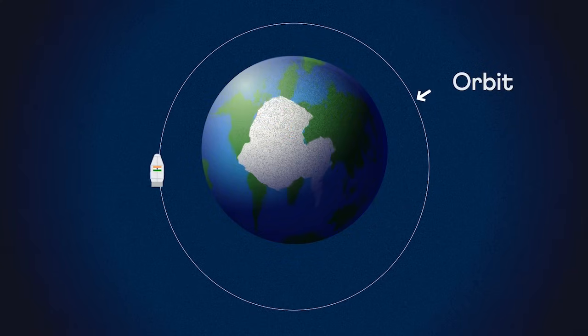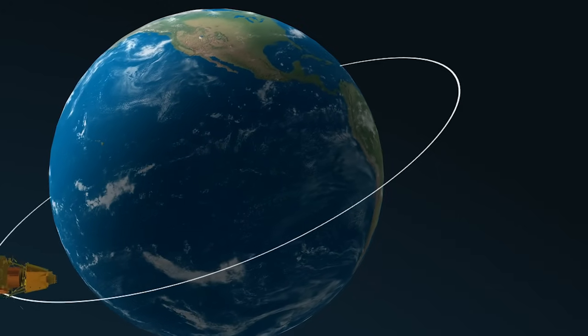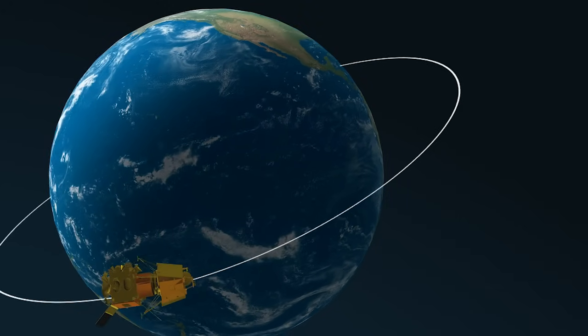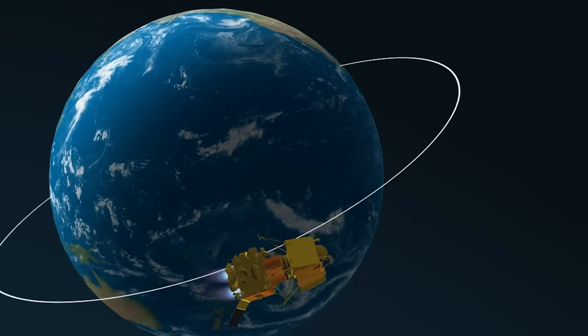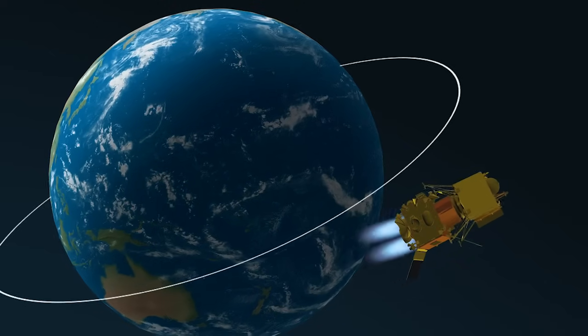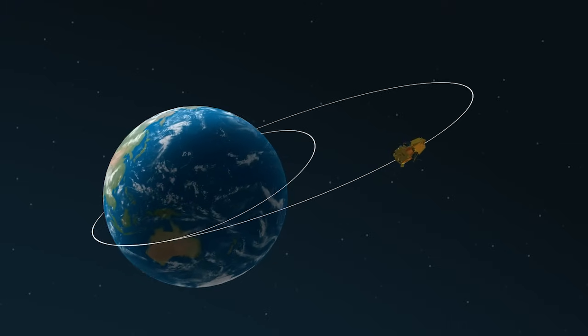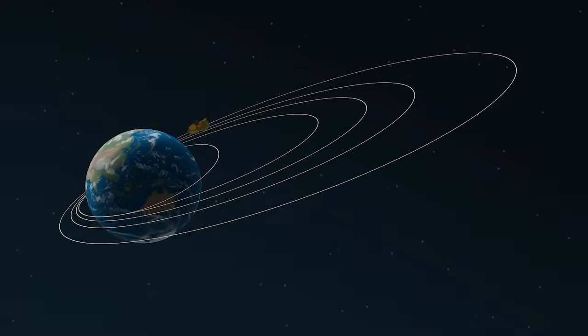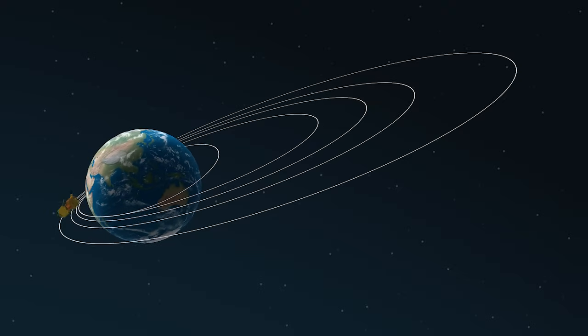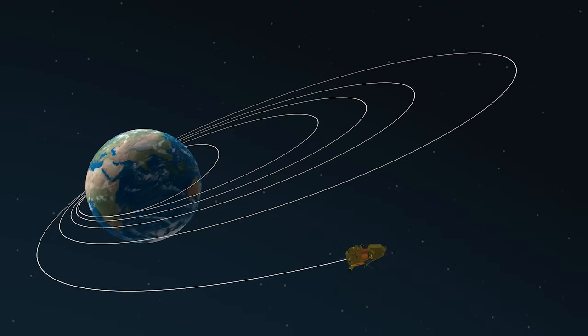The next task is to break free from the earth's pull. For that, rockets are fired again when the spacecraft is close to the earth. This increases the speed and the spacecraft goes into a bigger elliptical orbit. The process is repeated 5 times. After the 5th boost, the spacecraft's orbit is significantly increased, bringing it closer to the moon.